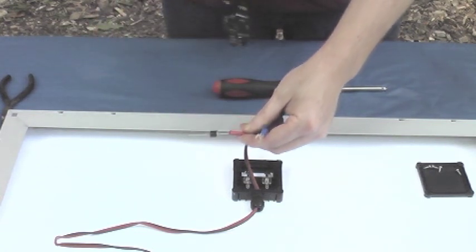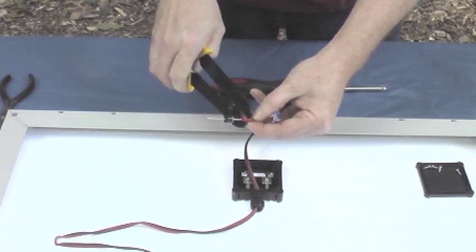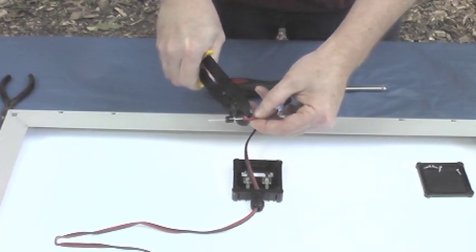Now we're going to crimp the diode into the connector with the silver band facing in the direction of the current flow towards the battery.